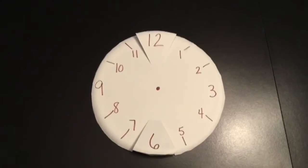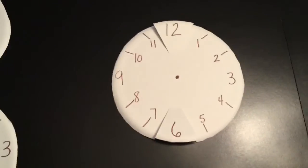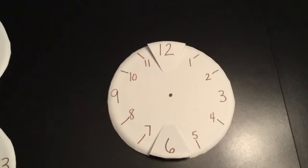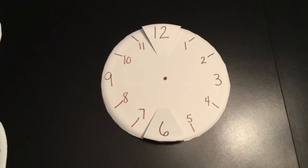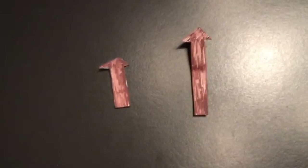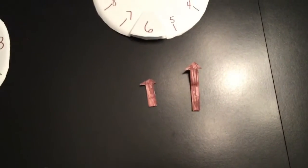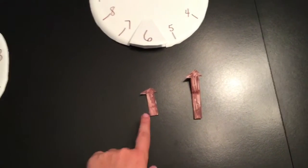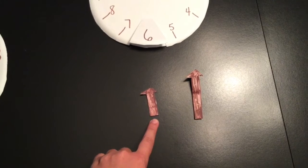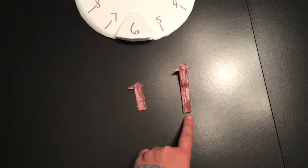Once you have your clock put together and the top piece is on top of the bottom, you're going to make two arrows. One needs to be longer than the other one. I colored and cut out two different arrows. The short one is my hour hand and the longer one is going to be my minute hand.